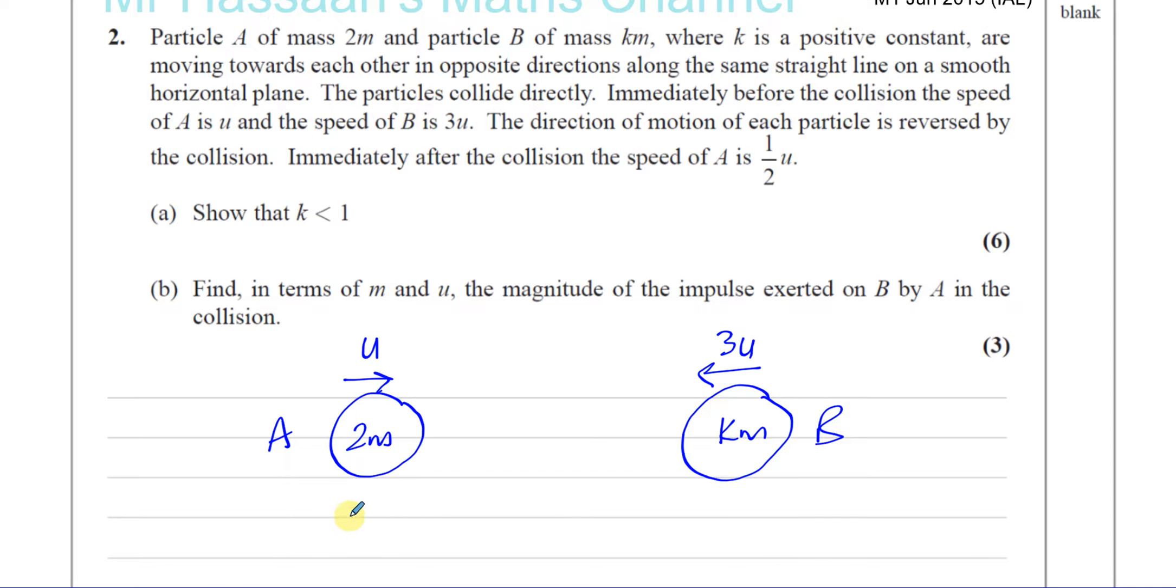And the direction of motion of each particle is reversed by the collision. So A is going to go this way and its speed is going to be half U. And B is definitely going to go this way, but we don't know its speed. Let's call that VB.